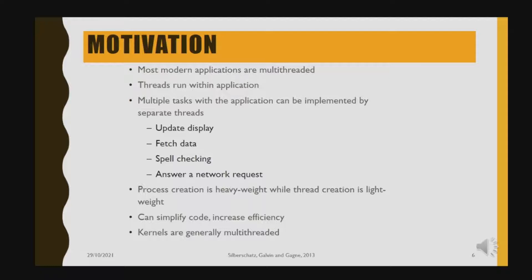Process creation is heavyweight while thread creation is lightweight, meaning if we use threads we use less resources compared to processes. This can simplify code and increase the efficiency of the system. Kernels are generally multi-threaded, and these are some of the factors that lead to the use of threads.